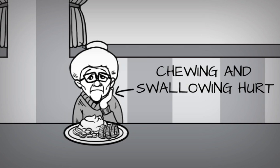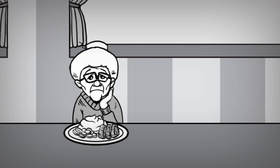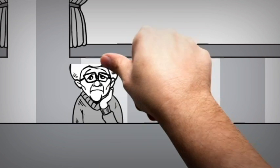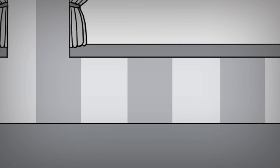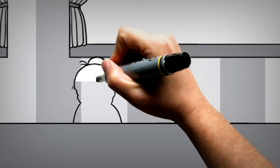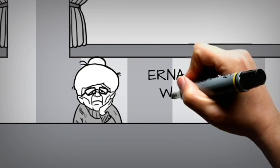She began to lose interest in food and lost her appetite. Erna was served pureed food to help with her eating, but for Erna, this food was unappealing and unappetizing. And the less Erna ate, the less vitamins and minerals her body got. She lost weight, her energy levels diminished, and finally so did her joy for life.